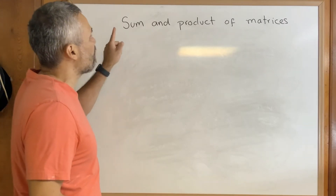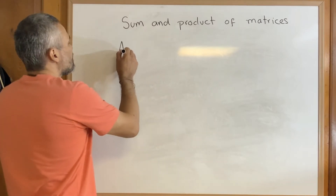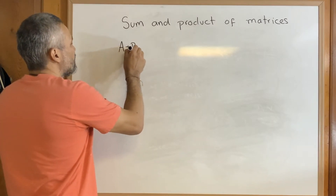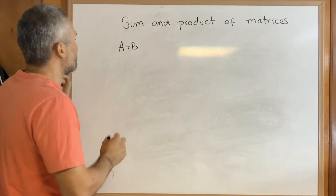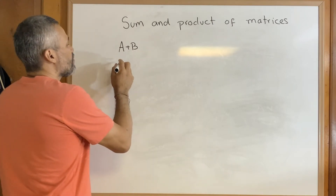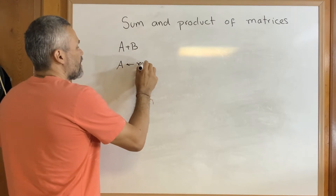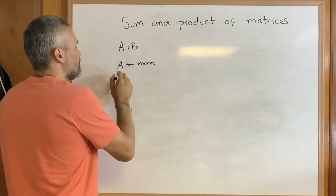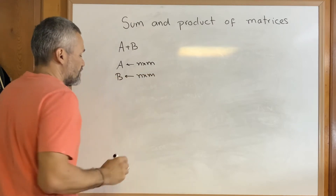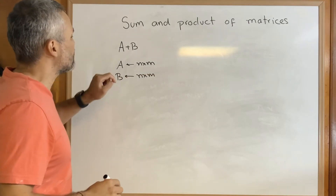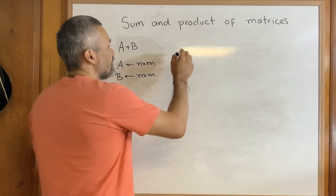Let's see how to do the sum and product of matrices. The first observation is that in order for the sum of two matrices to make sense, we need A and B to have the same dimension. A has to be an n by m matrix and B has to be an n by m matrix. And the sum of the two matrices, we just do it entry by entry.